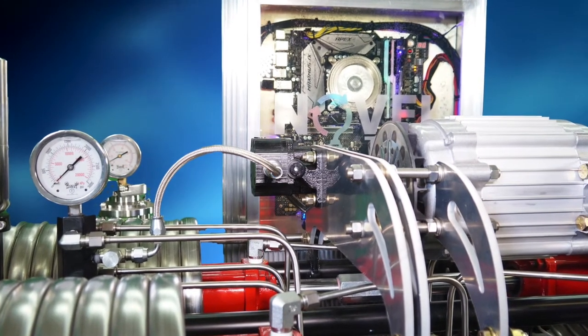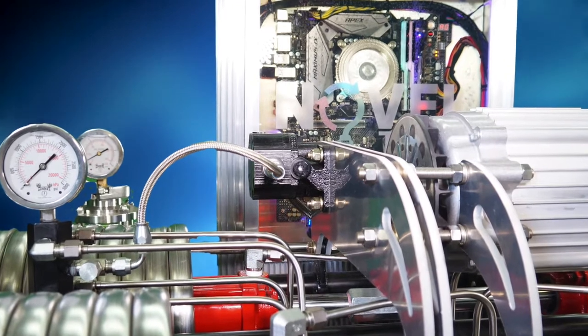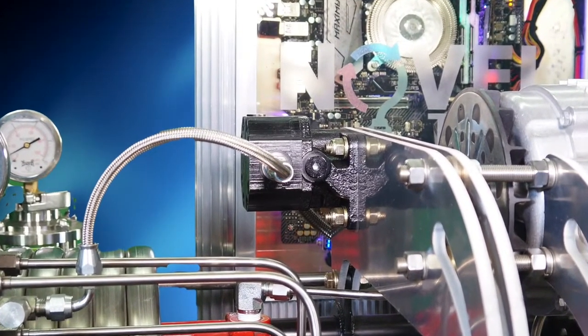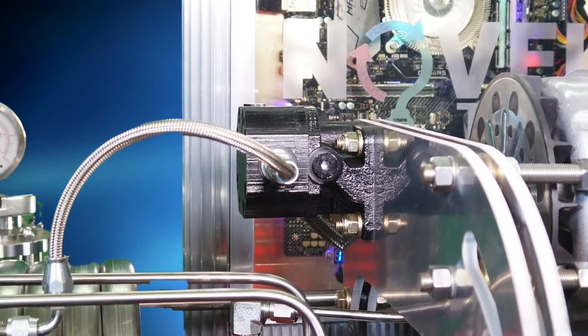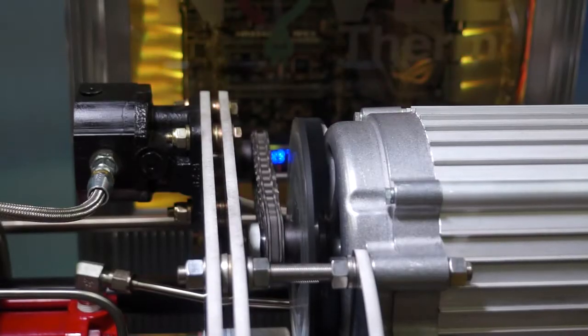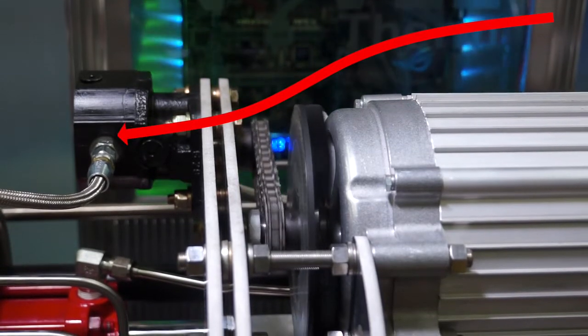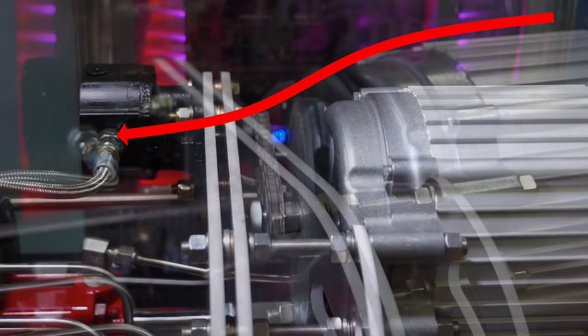Electricity production is achieved by delivering the pressurized hydraulic fluid to a hydraulic motor. The motor spins a shaft that directly spins an electric generator. Unlike this demonstration device, full-scale installations require no gear assembly or transmission, further reducing complexity and maintenance.